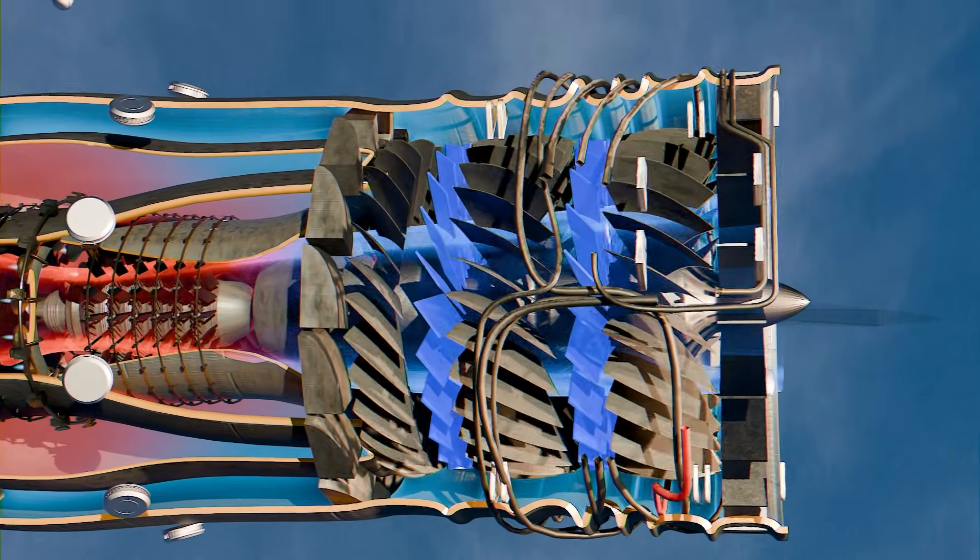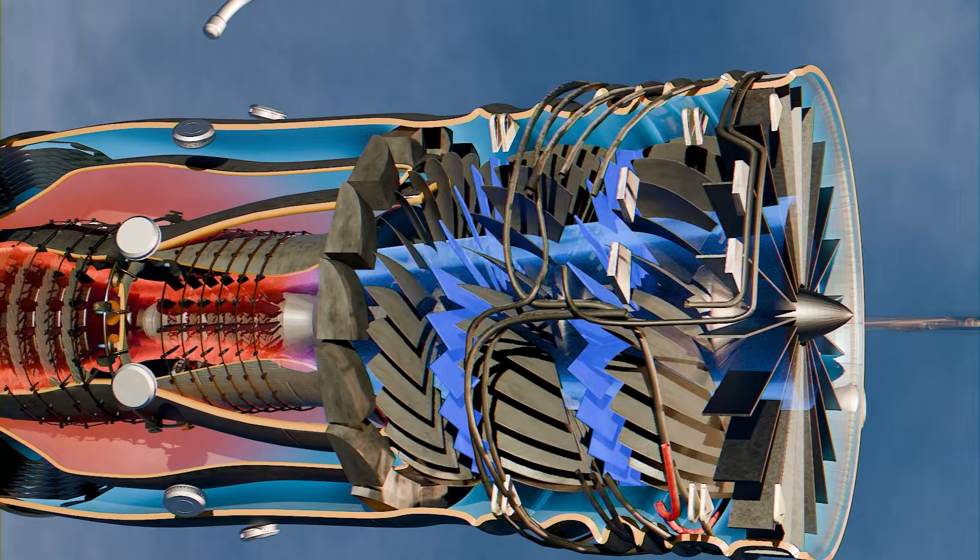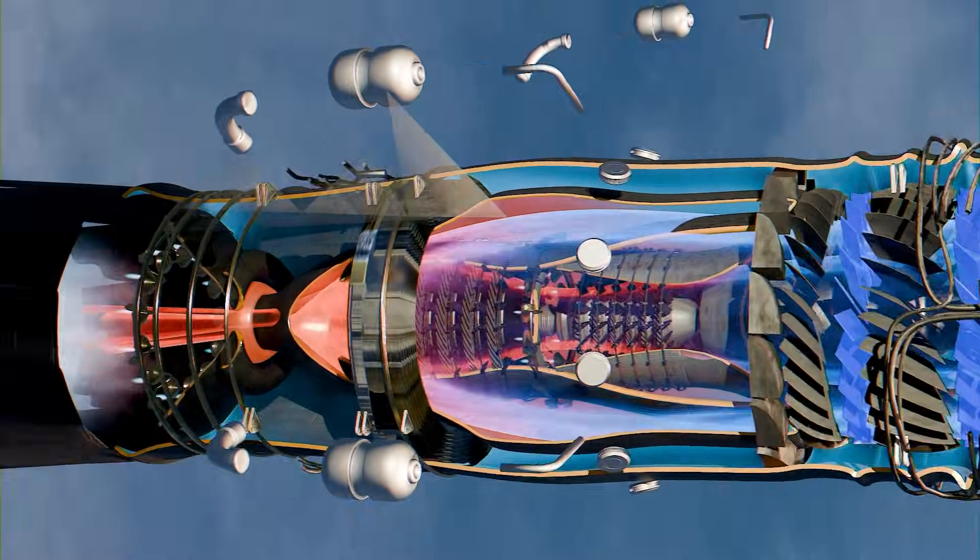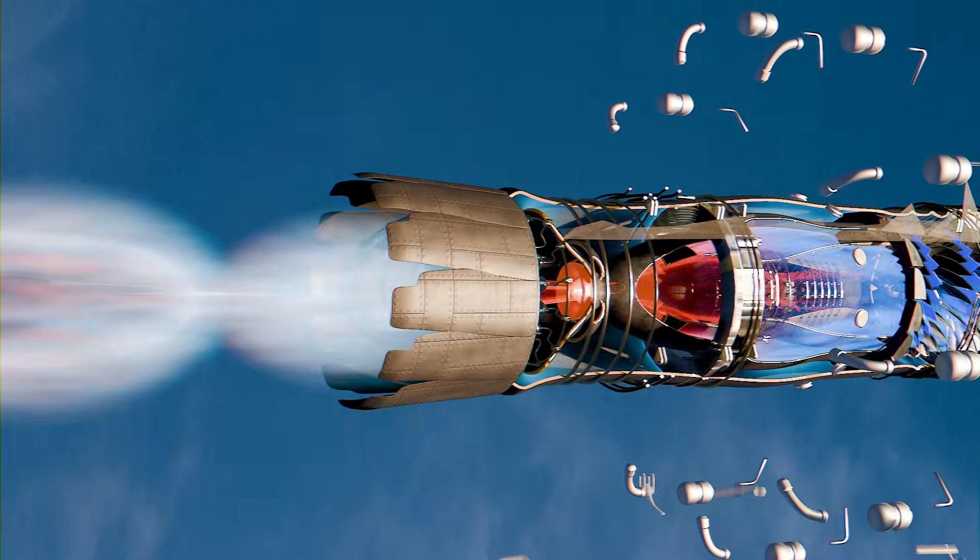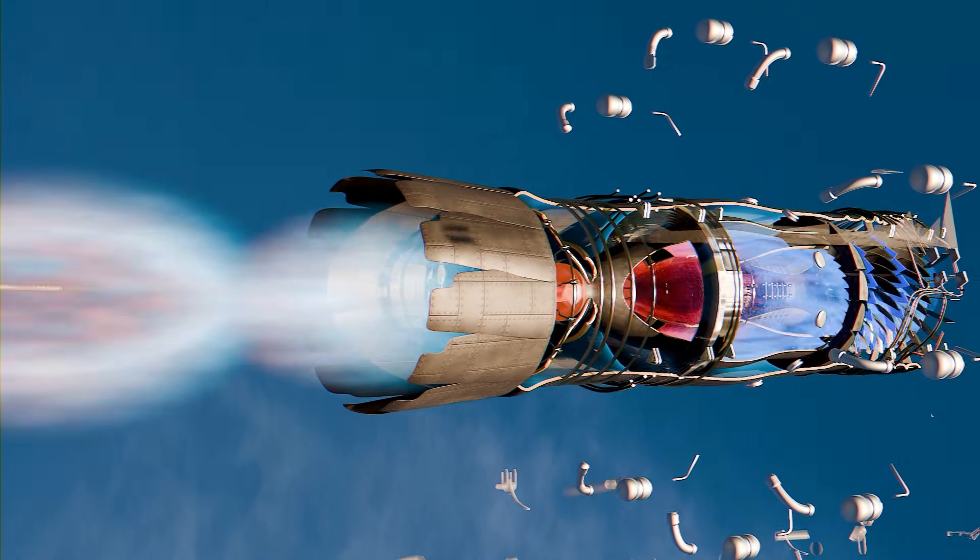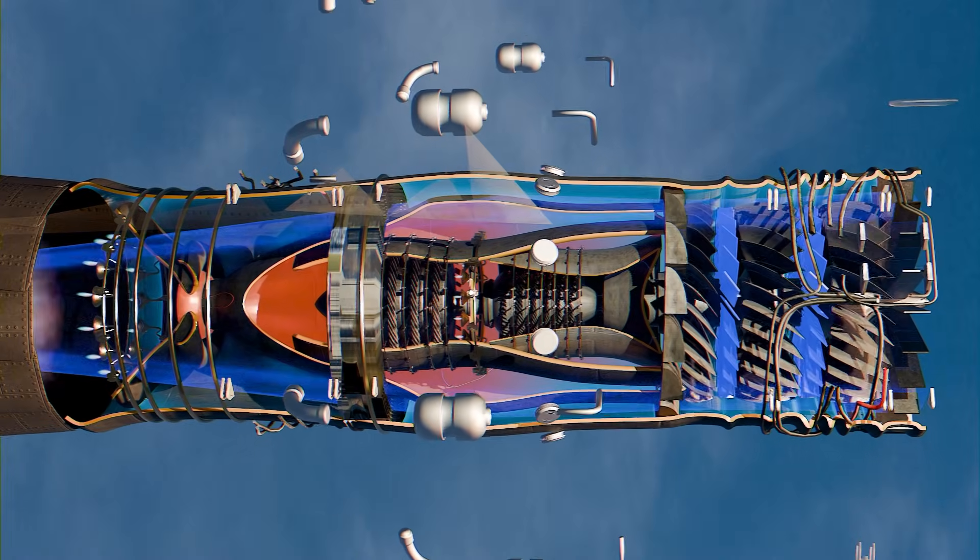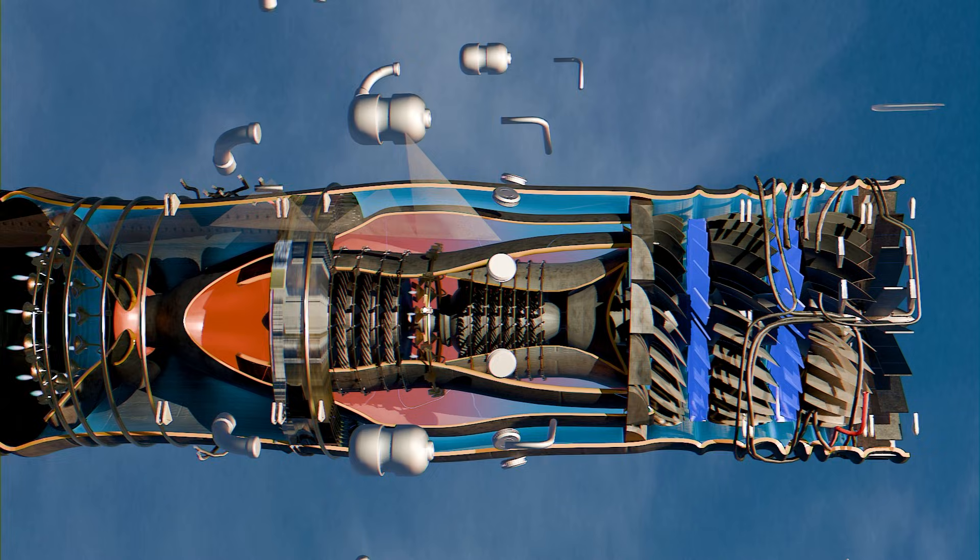The second and third fan stages take this further. They provide additional compression for core-bound air while also pushing bypass air with enough energy to generate quiet, efficient thrust during cruise. What makes the XA100 different is the introduction of a third stream of airflow, accessible right from these fan stages.